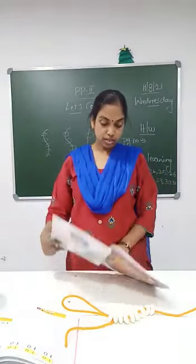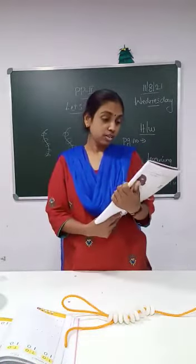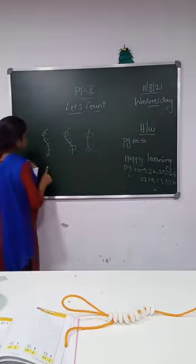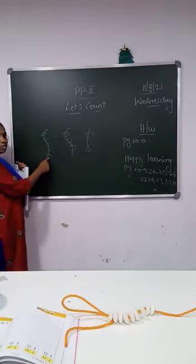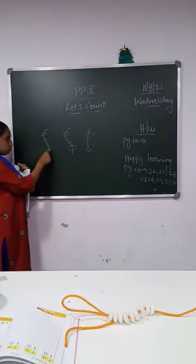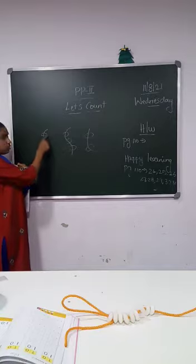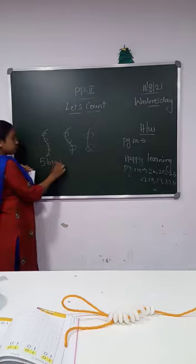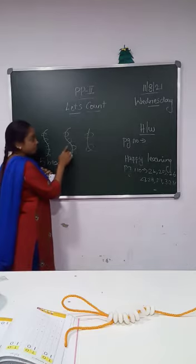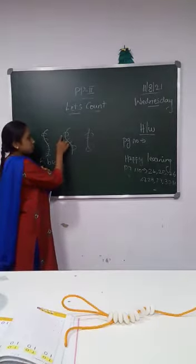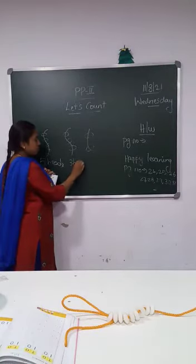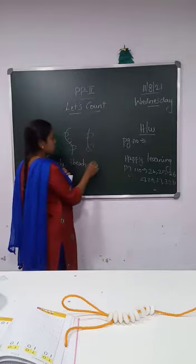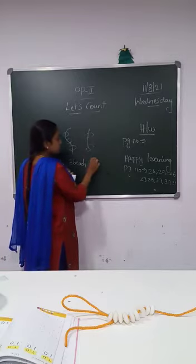And today now let us do this activity. Let's count. So here see, we have the string and the bits. Count along with me: 1, 2, 3, 4, 5. So how many bits do we have here? 5 bits. And here 1, 2, 3. So here you have 3 bits. And here 1, 2. You have here 2 bits.